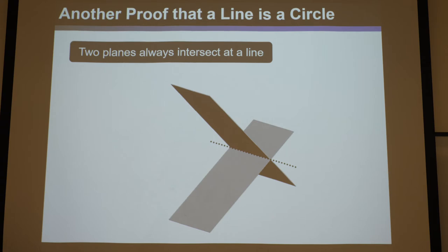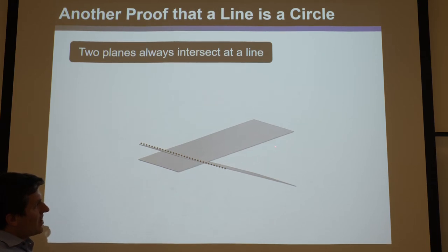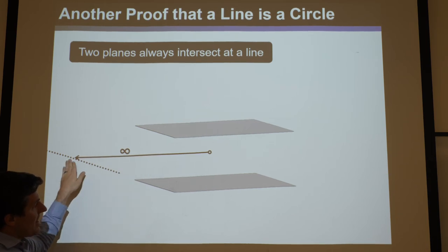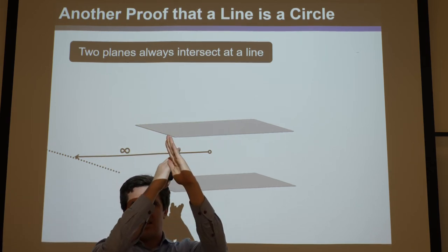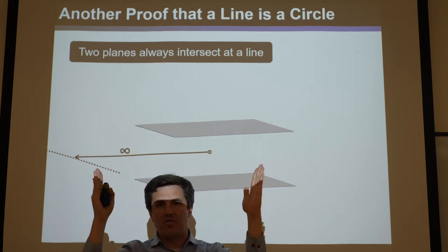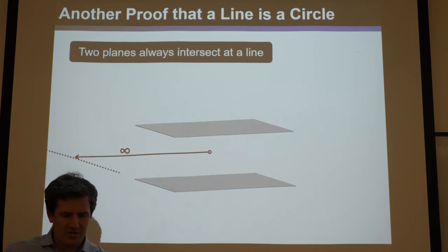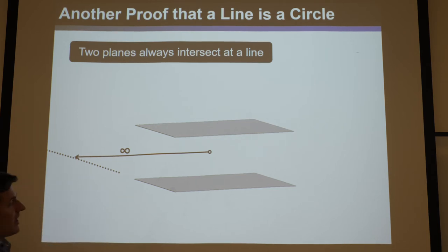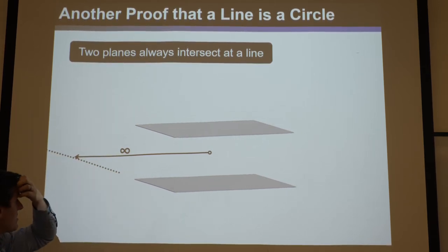To bend your mind even more: two intersecting planes always intersect at a line. As you make those planes more and more parallel, that line gets pushed further and further until finally they are parallel and it's pushed to infinity. So two planes always intersect at a line, even when they are parallel — that's the projective geometry aspect. Euclidean geometry says once they're parallel they don't intersect, but according to projective geometry they absolutely do — they still intersect at a line, but that line is at infinity.